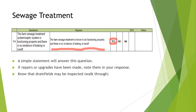Sewage treatment question: The farm sewage treatment system or septic system is functioning properly and there is no evidence of leaking or runoff. A simple statement will answer this question. If repairs or upgrades have been made, note them in your response. Know that drain fields may be inspected during the time of your inspection. For this response, circle yes: 'The farm sewage treatment is known to be functioning properly and there is no evidence of leaking or runoff.' Note that in Doc 4.04, the septic system or sewage treatment area has been marked on your field map.